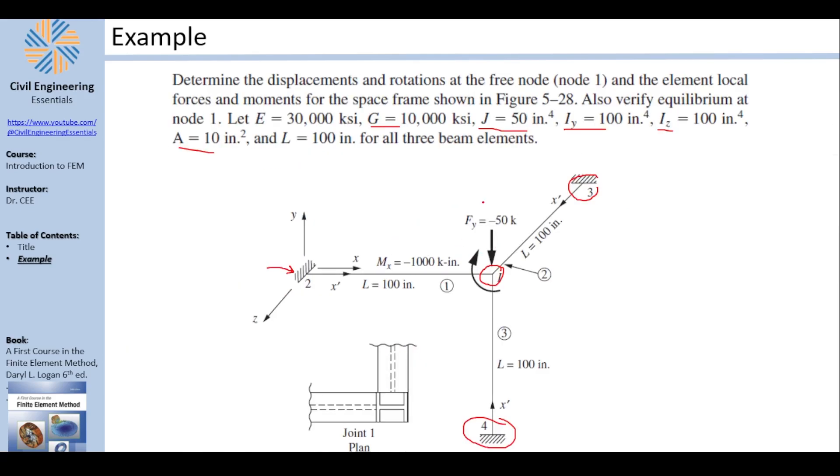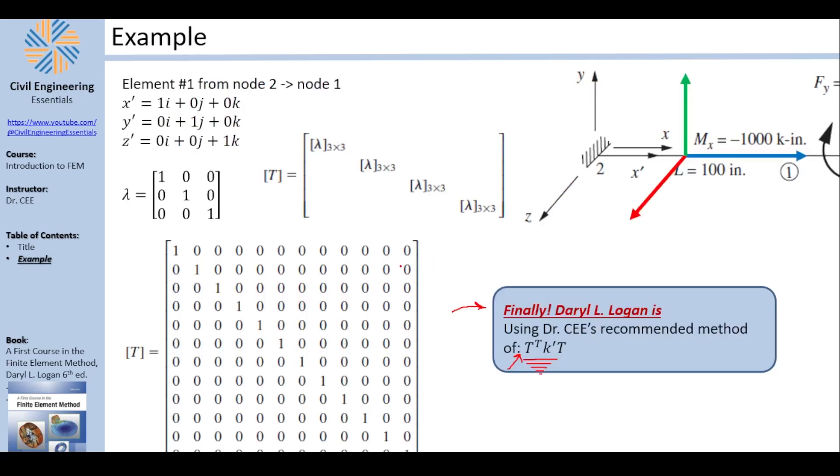This is the general question. You can see the global X axis going to the right, the global Y axis going up, and the global Z going out of the page towards you. I tried putting my local X, Y, and Z for each element. The blue here means the local X axis of element 1, green means the local Y axis, and red means the local Z axis. I did this to help you find the unit vectors of each local direction.